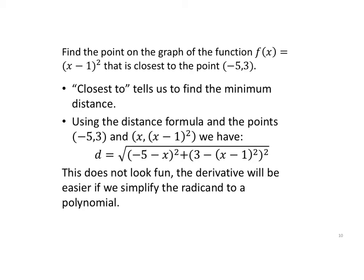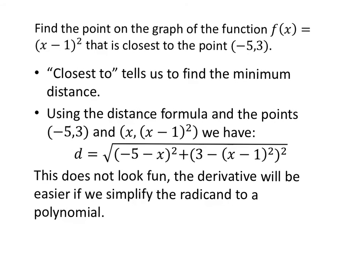Find the point on the graph of f(x) = (x - 1)² that is closest to the point (-5, 3). If you need to, draw it. I have the graph of (x - 1)² squared. So here at 1, I'm going to have a parabola. At negative 5, 3, we'll have some point. And we're looking for this distance. I want to minimize this distance.